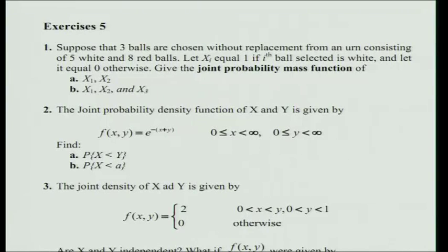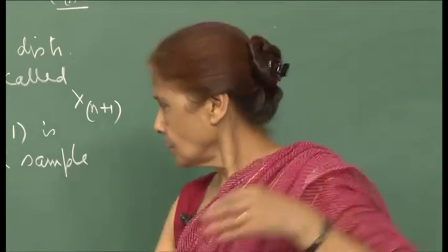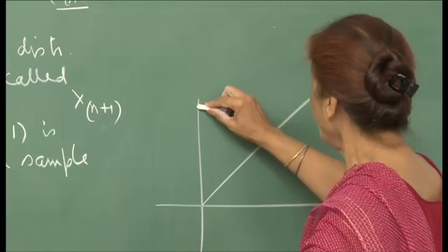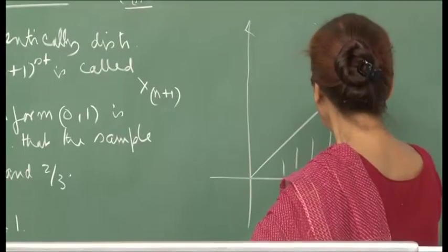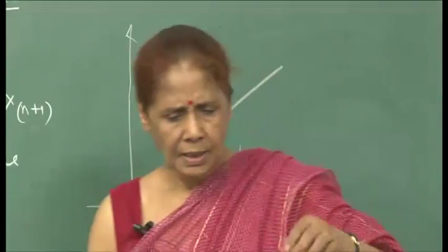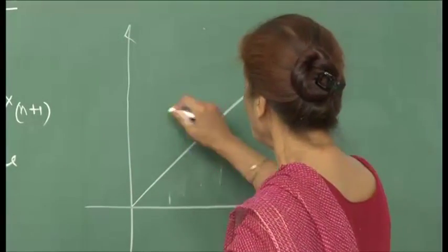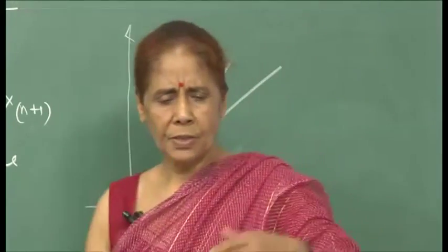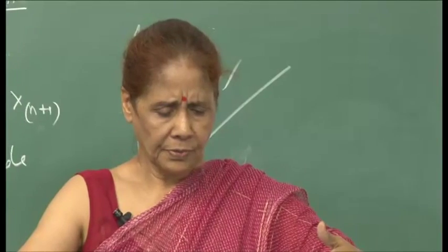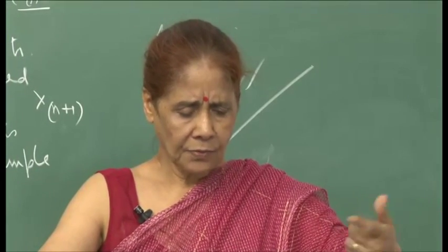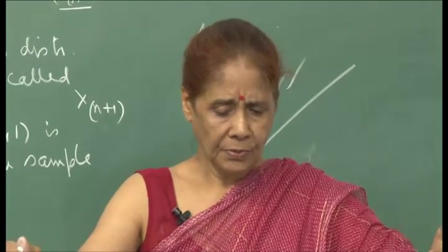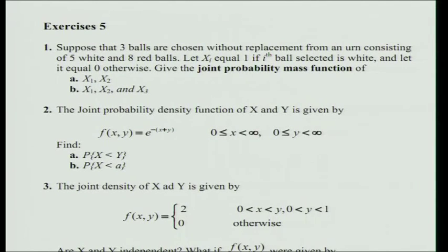Question 2: the joint PDF of X and Y is f(x,y) = e^{-(x+y)}, for x,y ≥ 0. Find P(X < Y). The event X < Y corresponds to a region in the first quadrant. Fix your limits: x varies from 0 to y, and y varies from 0 to infinity. For part b, find the marginal of X first, then compute P(X < a).